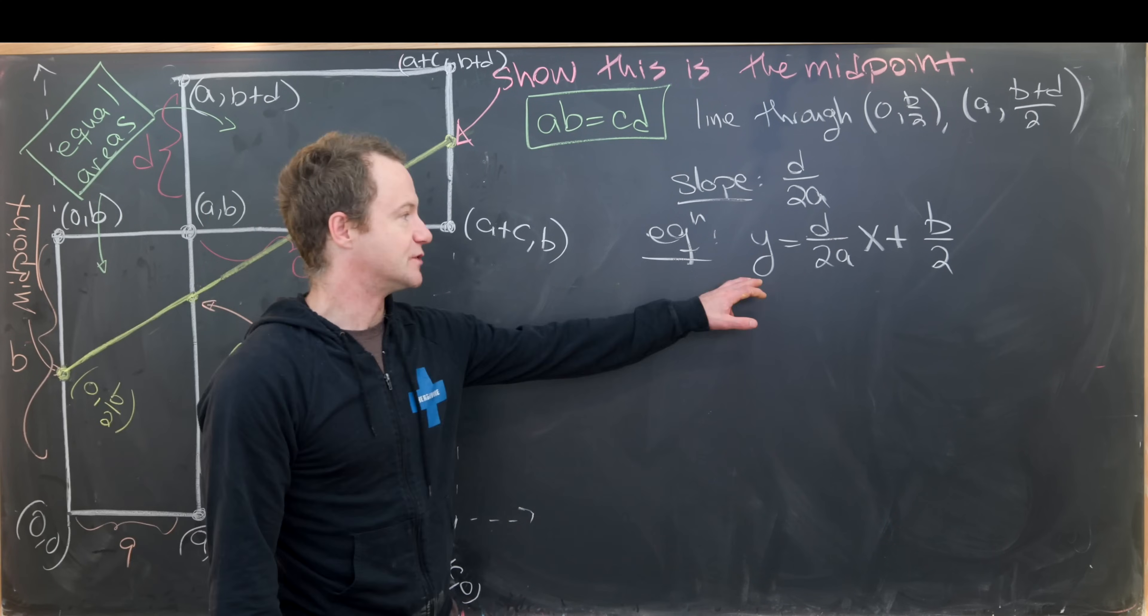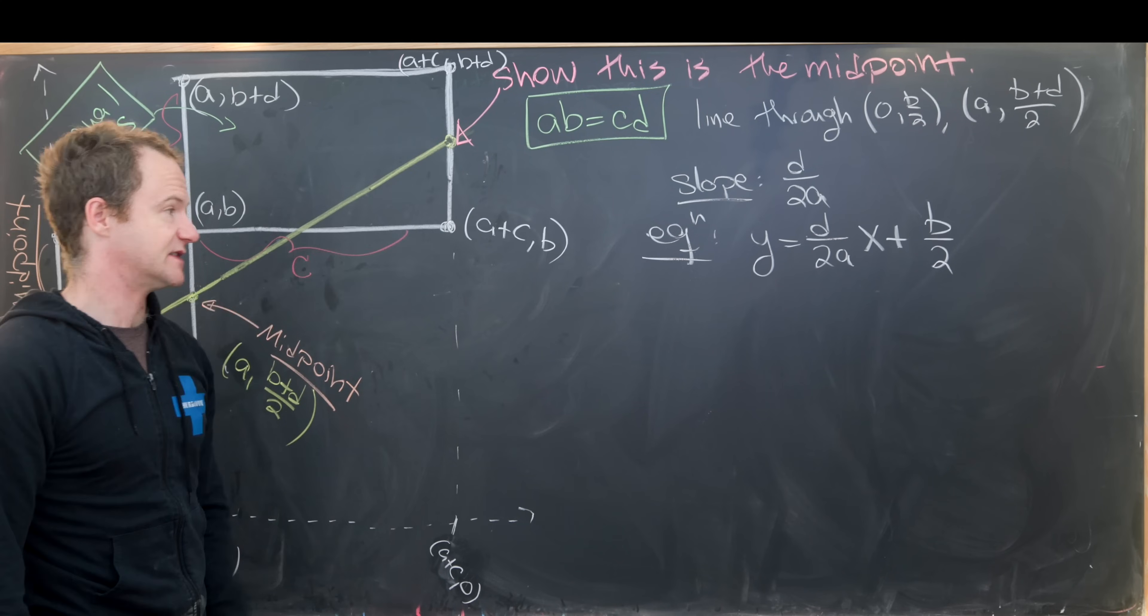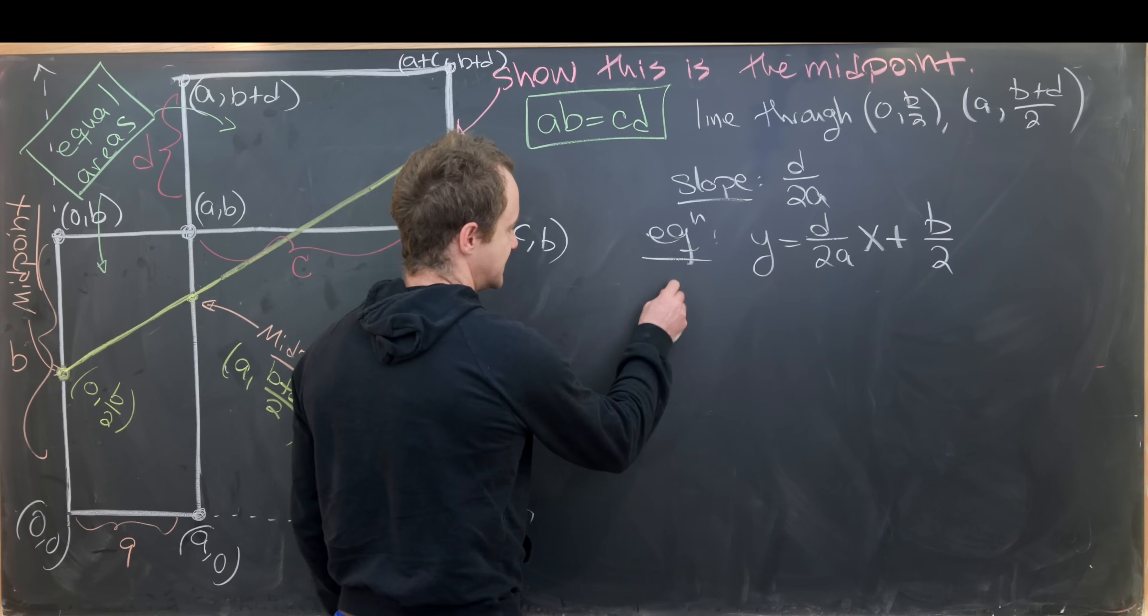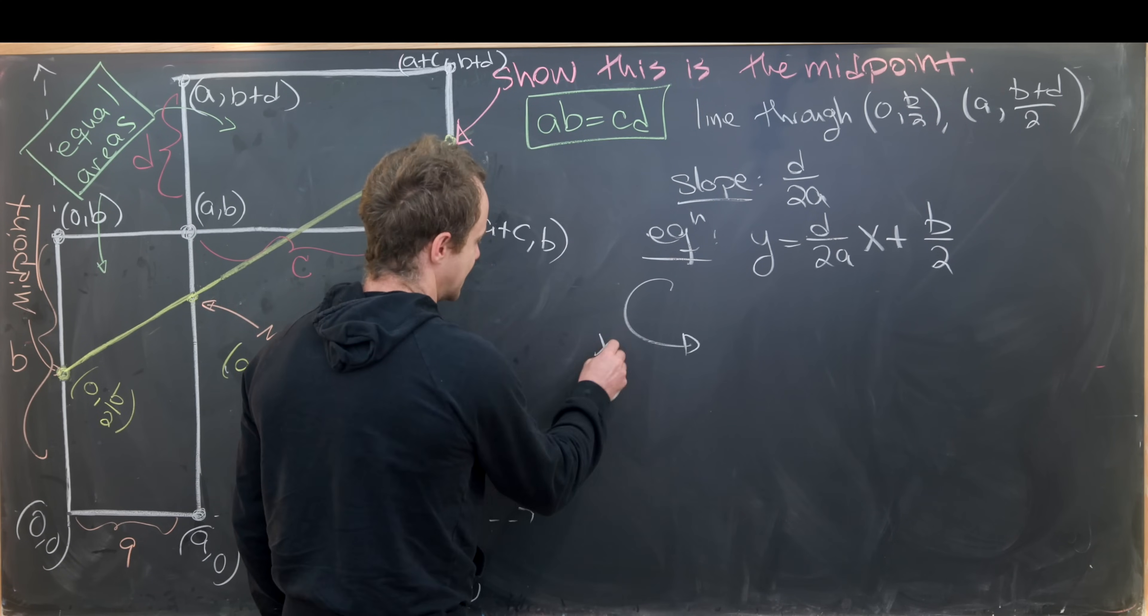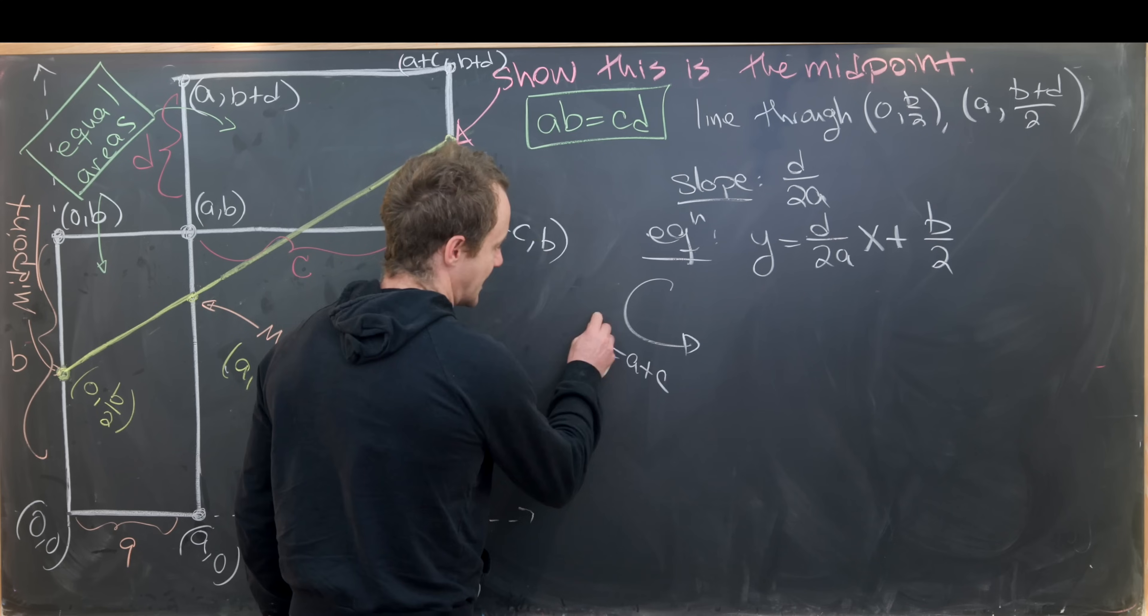So now we need to evaluate this at x = a+c, and that'll give us the y-coordinate of this intersection point. So let's do that. We're setting x equal to a+c and we need to see what happens.